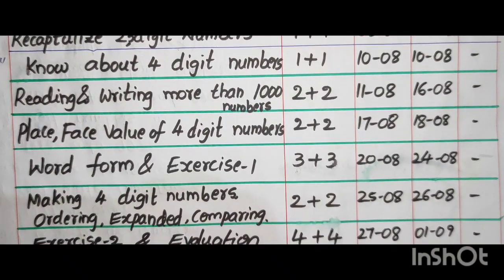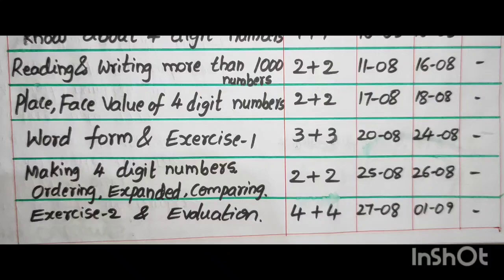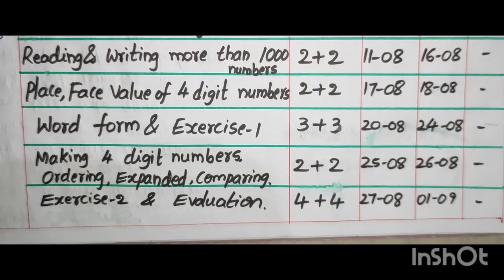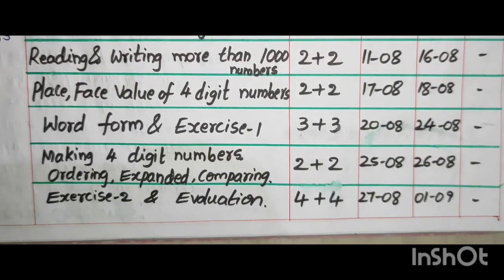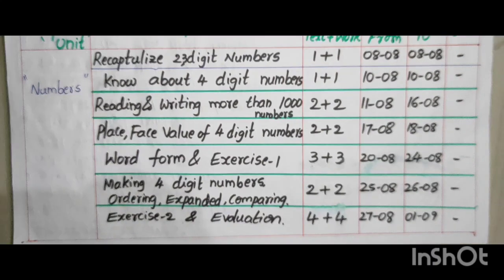Making 4 digit numbers, ordering, expanded and comparing numbers, 2 plus 2, August 25 to August 26. Exercise 2 and evaluation, 4 plus 4, August 27 to September 1. These are the subtopics and periods and time.